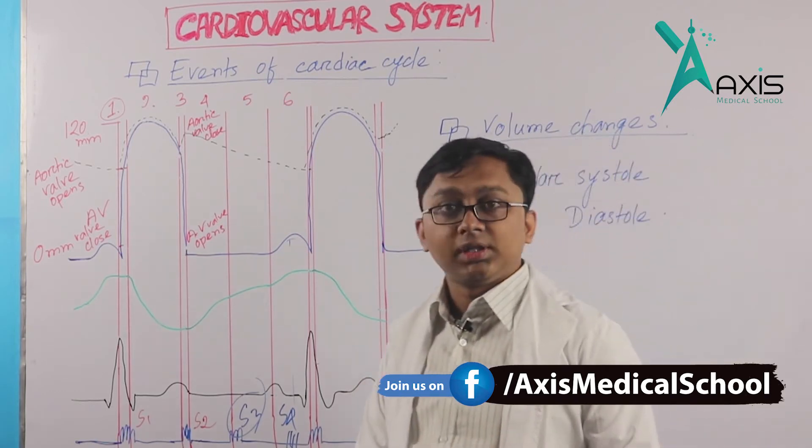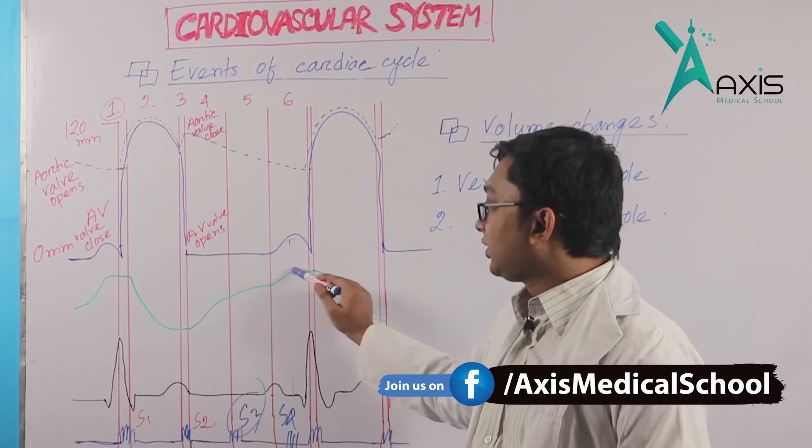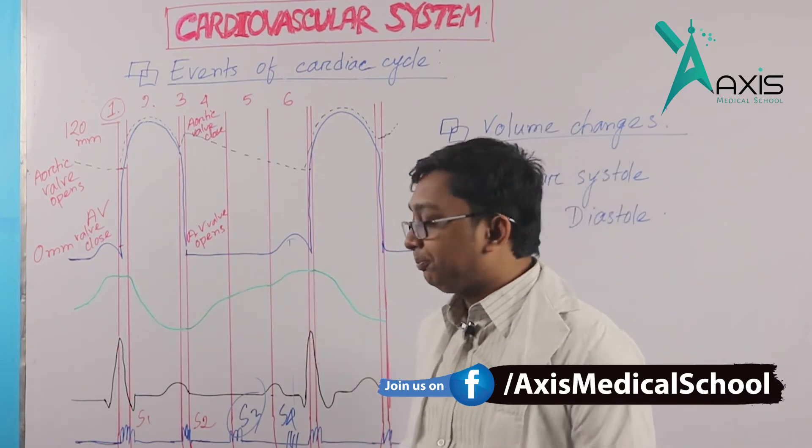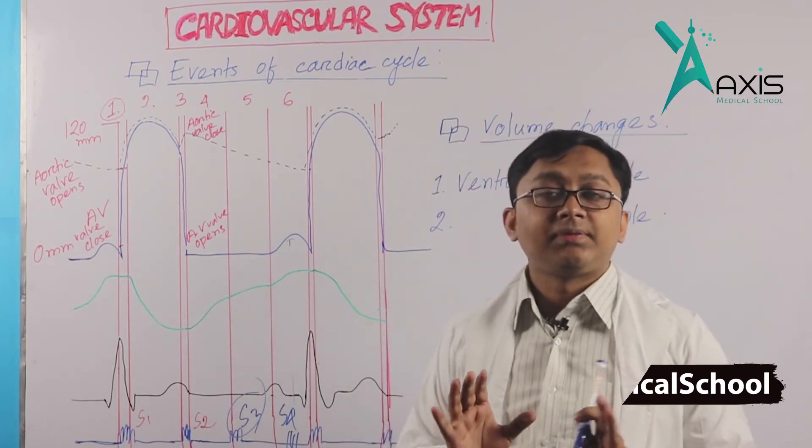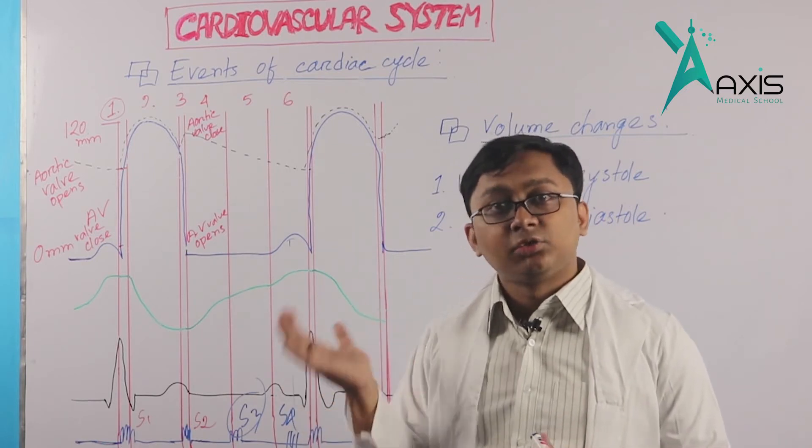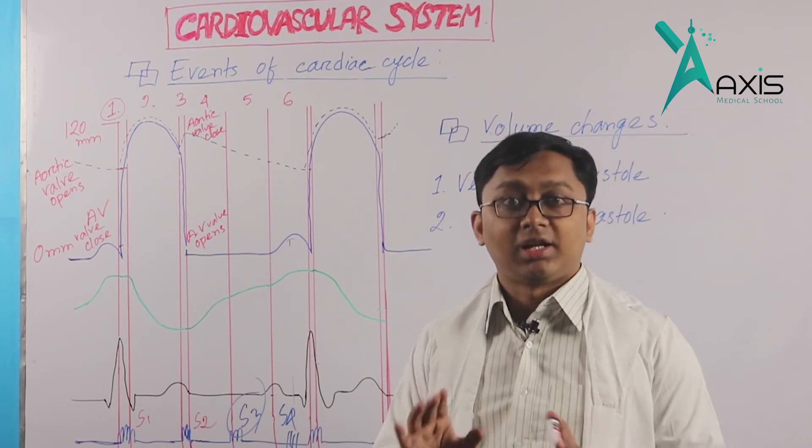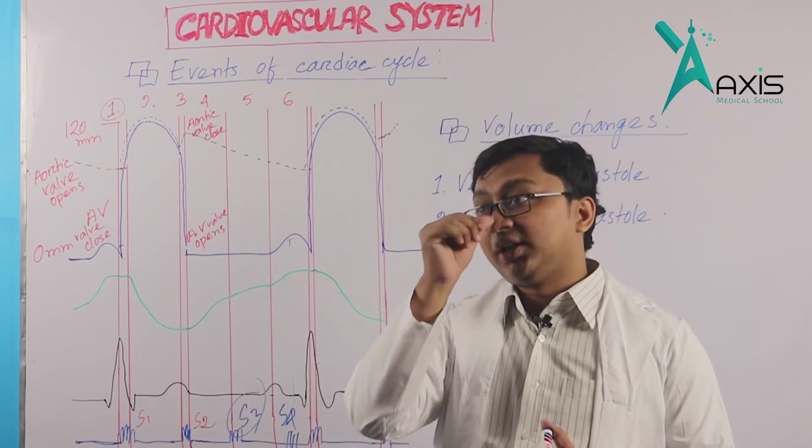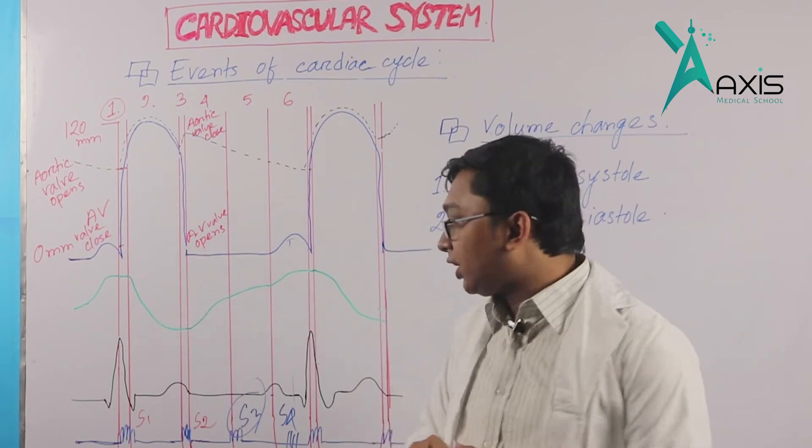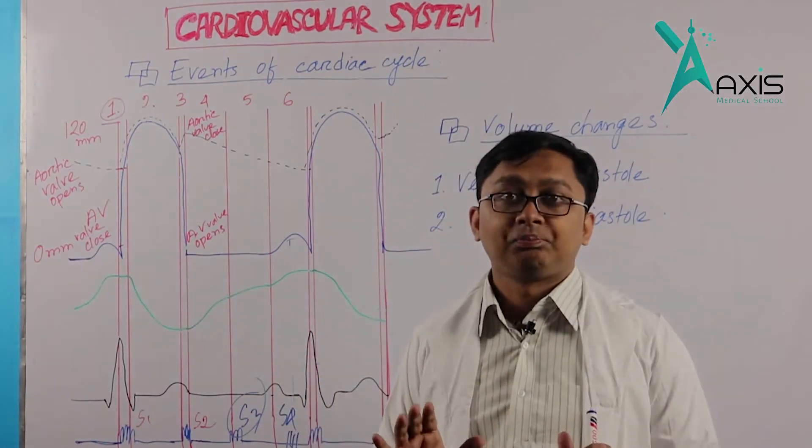After systole finishes, the ventricle enters diastole. The first phase of diastole is the protodiastole period. During this period, blood is still ejected from the ventricle due to the momentum of the blood, so volume continues to decrease.